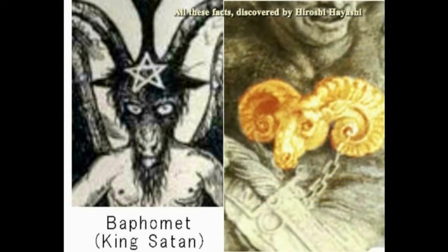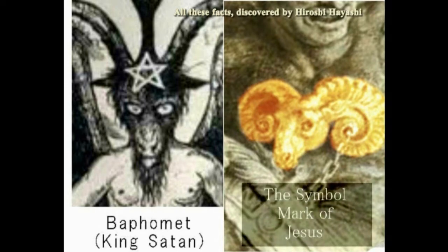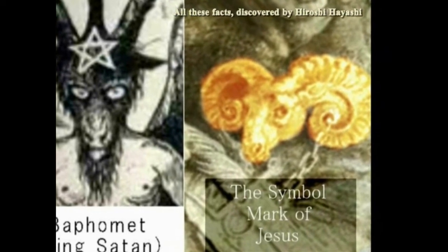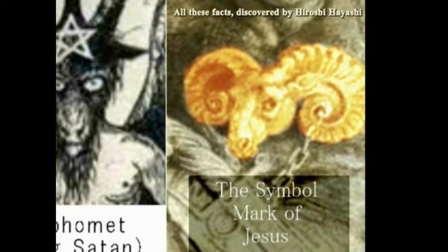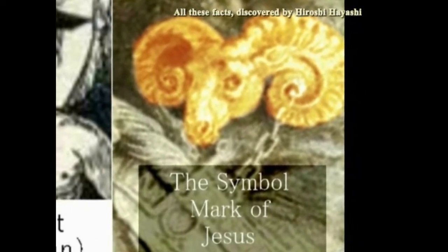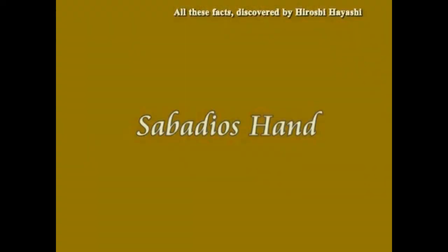システィーナ礼拝堂の天井には羊の絵が描いてありますが、これは羊ではありません。ヤギです。反転してみますと、まさしくバフォメットの姿になります。つまり、このような形で、1500年後のイエスは、アンチローマンカトリック教の姿勢を明確にしました。そして、イエスの胸に描かれているバフォメットの像と、バフォメットのシンボリックな像が一致します。これが事実です。では、順に説明していきます。